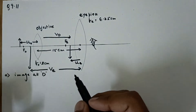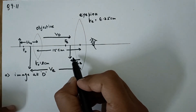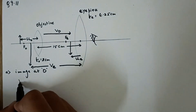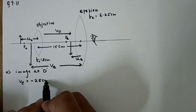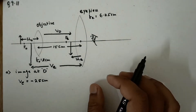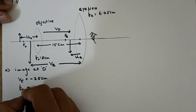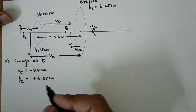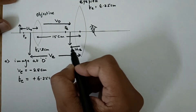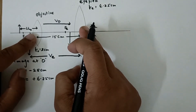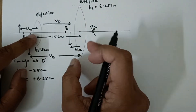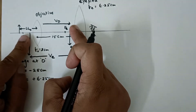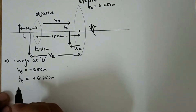Since all distances are measured from the optical center, for the eyepiece the incident ray goes in one direction, so this distance is in the opposite direction of the incident ray, meaning v_e is minus 25 centimeters. The focal length of the eyepiece f_e is plus 6.25 centimeters because it is a converging system. From the lens formula we will find u_e. Once I get u_e, the distance between the two lenses is 15 centimeters, so I subtract to get v_o, and from v_o and f_o I can find u_o.